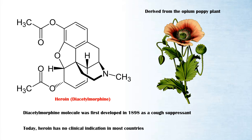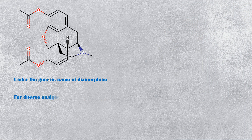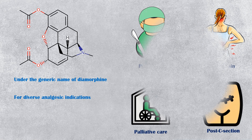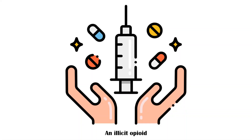Some countries allow the use of heroin, known under the generic name of diamorphine, for diverse analgesic indications, such as postoperative pain, chronic pain, palliative care, and even post-cesarean section.